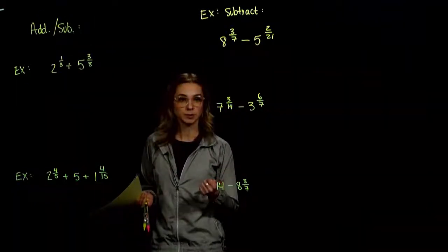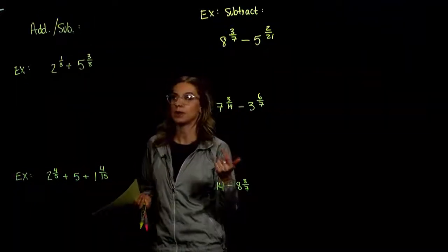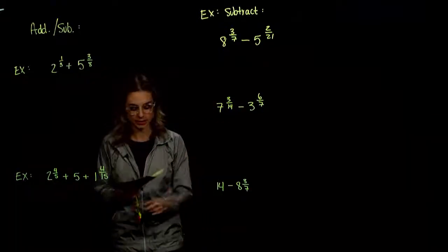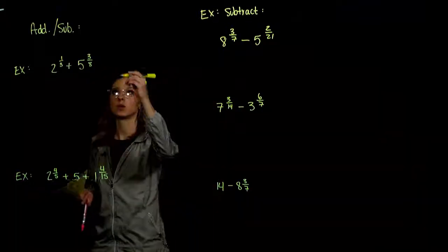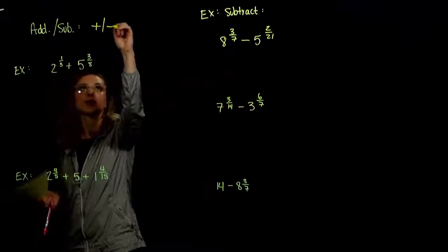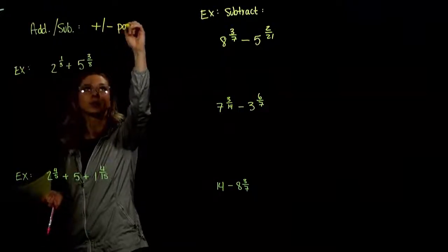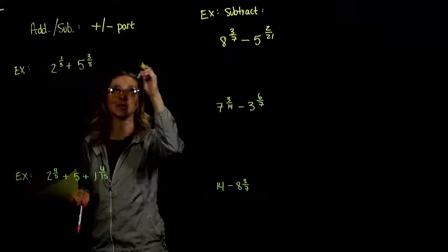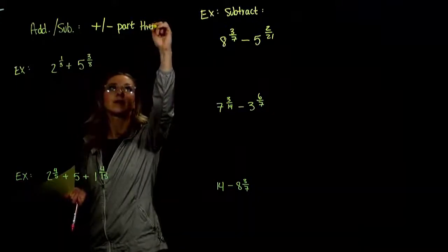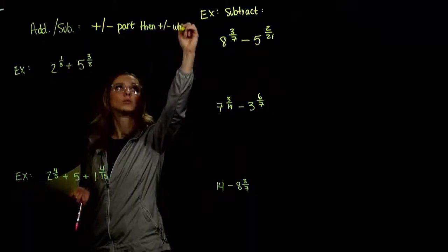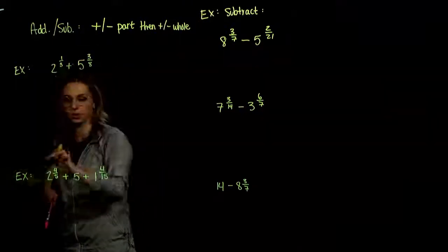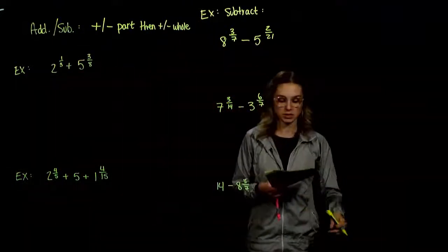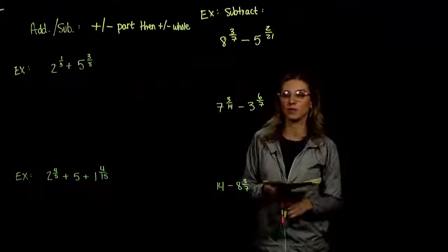We've handled multiplication and division. Now we're going to look at addition and subtraction. When we add or subtract mixed numbers, the first thing we want to do is add or subtract the fractional part — the small piece tagging on the end — and then add or subtract the whole. So we hit the parts first and then we deal with the whole.